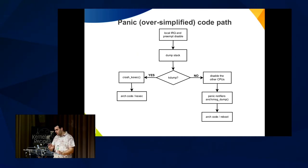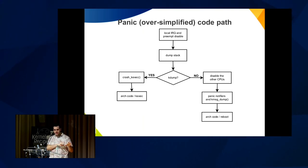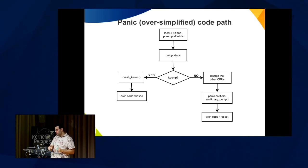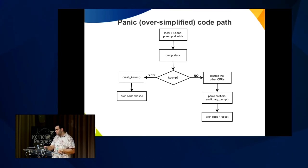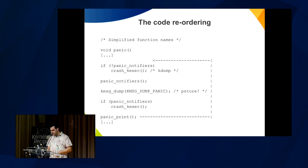This is an oversimplified flow. First, panic disables IRQs and preemption, we dump the stack. If kdump is set, we jump to the crash kexec function and the architectural code that does kexec. If kdump is not set, we disable secondary CPUs so only one CPU keeps running. Then we run panic notifiers — we'll talk more about that soon. kmsg_dump is the infrastructure used by pstore, which registers as a kmsg dumper. After that we run panic_print, and finally if reboot-on-panic is set we have the architectural code to perform the reboot.